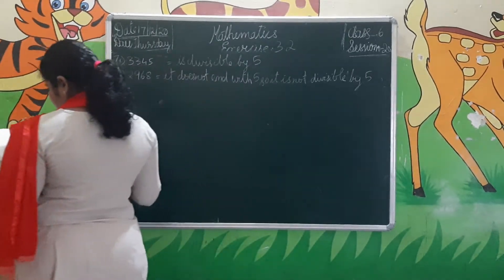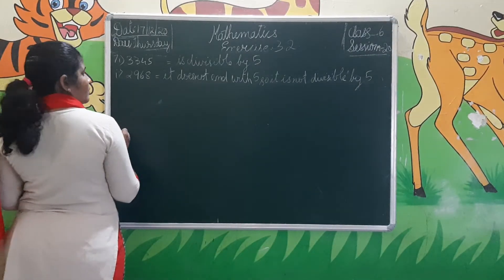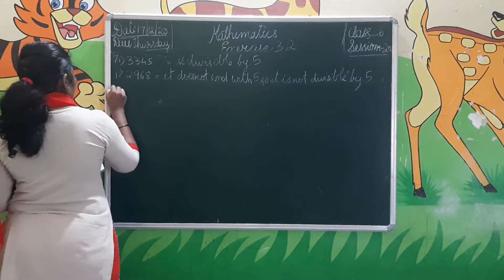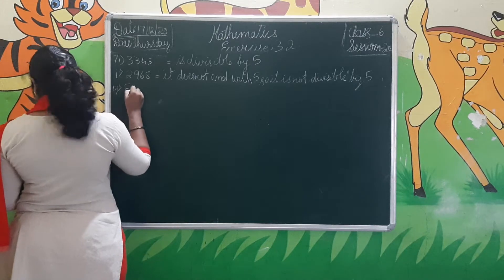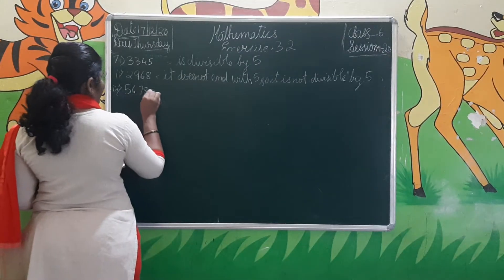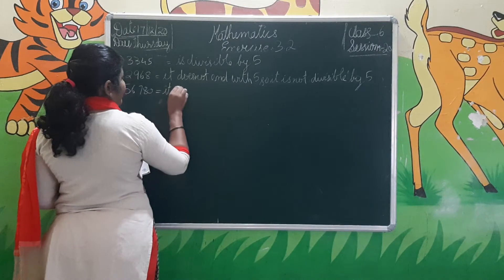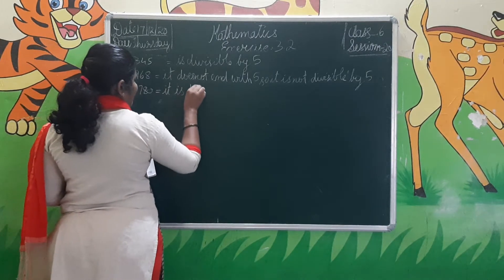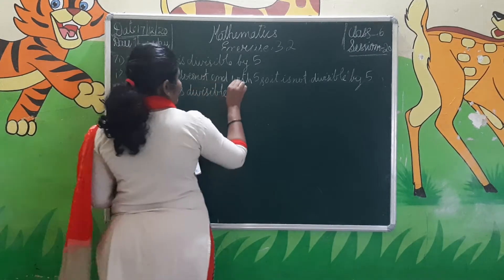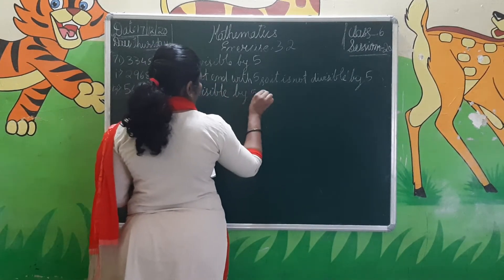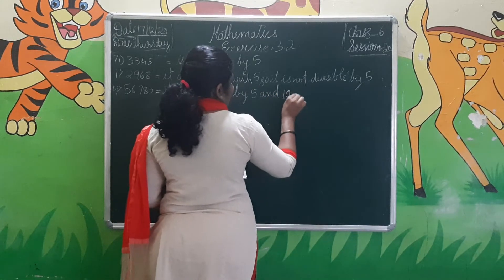Third number is 56,780. It ends with 0, so it is divisible by 5 and also by 10.